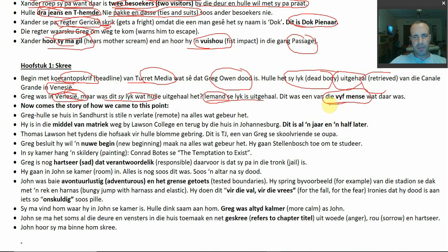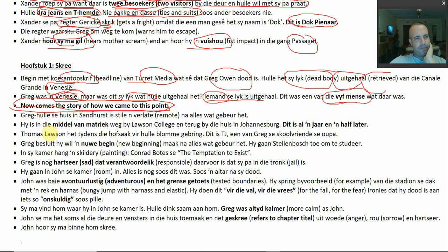Greg was in Venice with five other people — we'll see what happened to them about sixty chapters later; there are sixty-eight chapters in total. Back to the present: Greg is at home in Joburg, Sandhurst. It's very quiet, very dead after everything that's happened — a dark, depressing cloud hanging over the whole family after Greg exposed his father's criminal status.